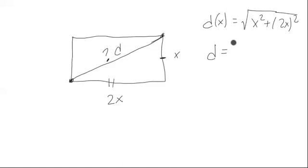So we could rewrite this as d is equal to this, but let's square both sides. So we get d squared is equal to x squared plus now this is 4x squared. So we get 5x squared is equal to d squared.